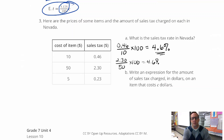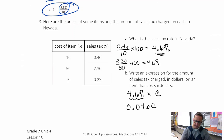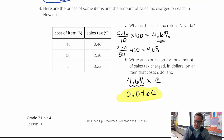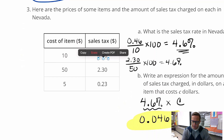Write an expression for the amount of sales tax charged in dollars on an item that costs C dollars. We're just going to do 4.6% times C, but we don't want to leave that in percent form — we're going to change that to the decimal equivalent 0.046 times C. If we multiply any of those item prices by 0.046, you're always going to get the sales tax.